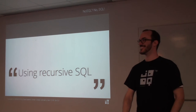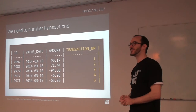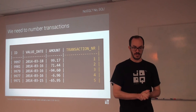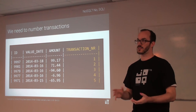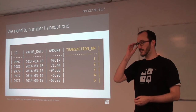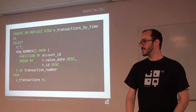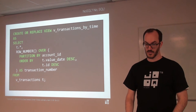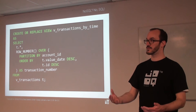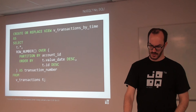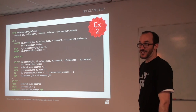Recursive SQL. In order to calculate this query recursively, I prepared the database differently — I added a transaction number to simplify the example. I ordered all the transactions by a discrete increasing number, calculated with ROW_NUMBER() as a window function. I just have this as a view so I readily have the transaction number. Now this is recursive SQL — a lot of stuff in here.